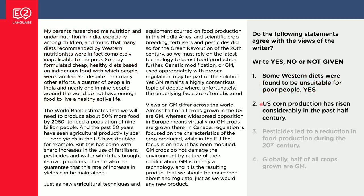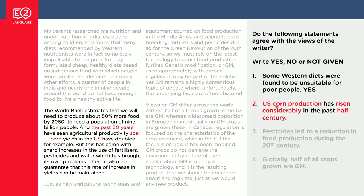How about number two? Again, we've got a good scanning word here: US. US corn production has risen considerably in the past half century. Over here in the text — past half century, past 50 years, soar, which is rise considerably, corn and US. We're in the right spot. So we slow down and read: the past 50 years have seen agricultural productivity soar, and corn yields in the US have doubled. So: US corn production has risen considerably — yes, double is rising considerably — in the past half century, the past 50 years. So again, this is YES — it's saying the same thing as the text.